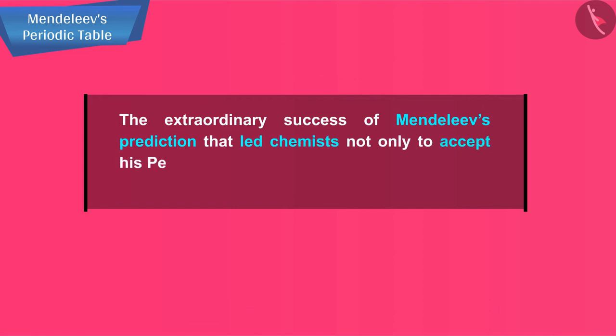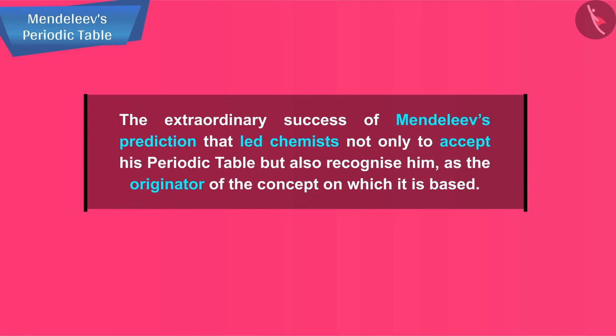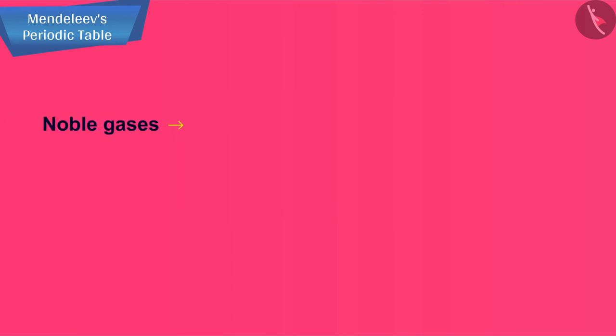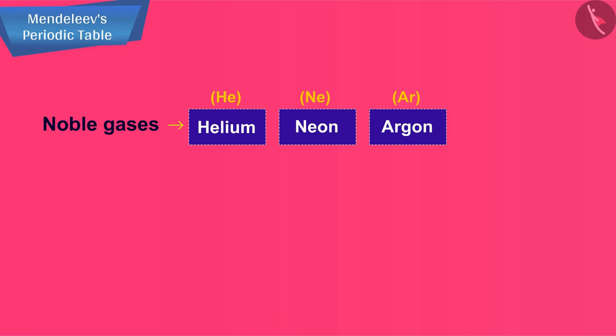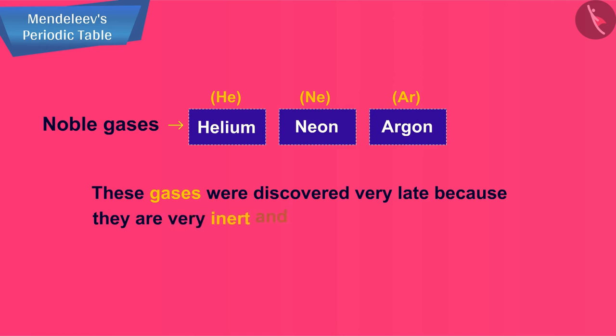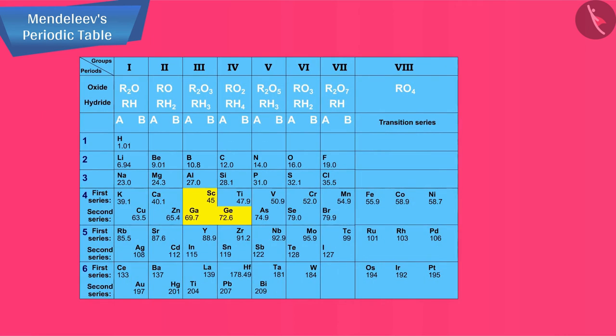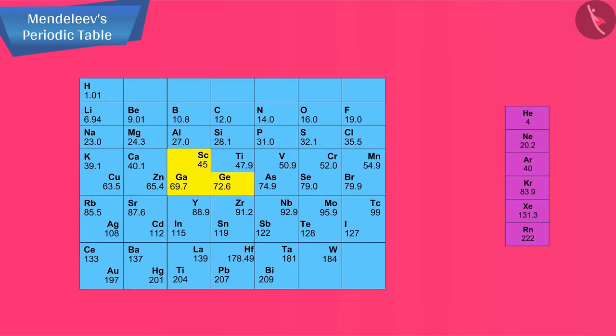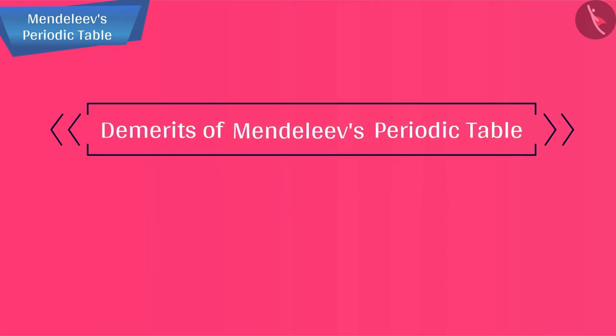Noble gases like helium He, neon Ne, and argon Ar have been mentioned in many a context before this. These gases were discovered very late because they are very inert and present in extremely low concentrations in our atmosphere. One of the strengths of Mendeleev's periodic table was that when these gases were discovered, they could be placed in a new group without disturbing the existing order.